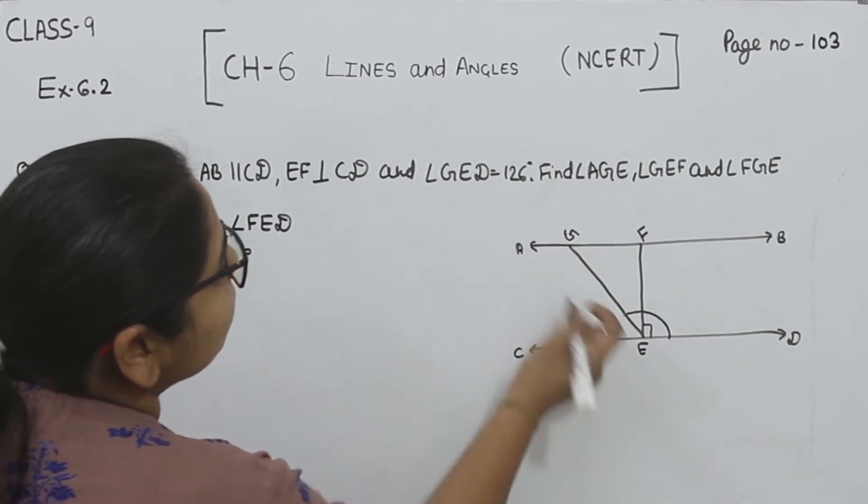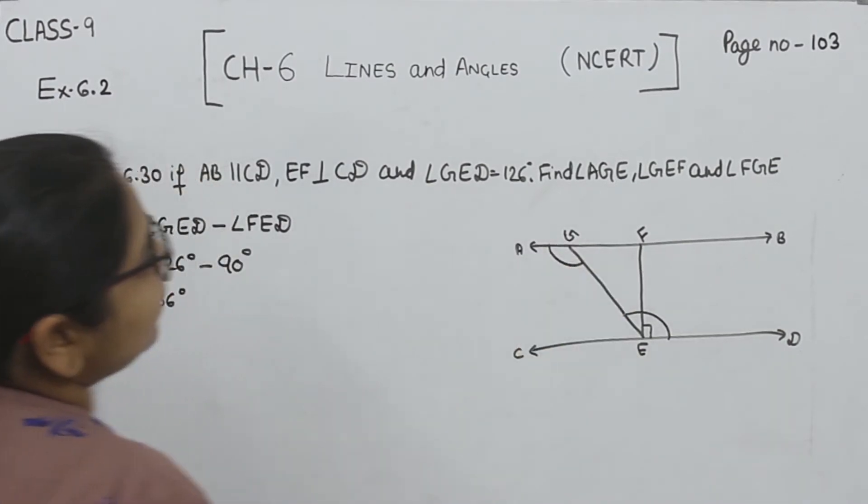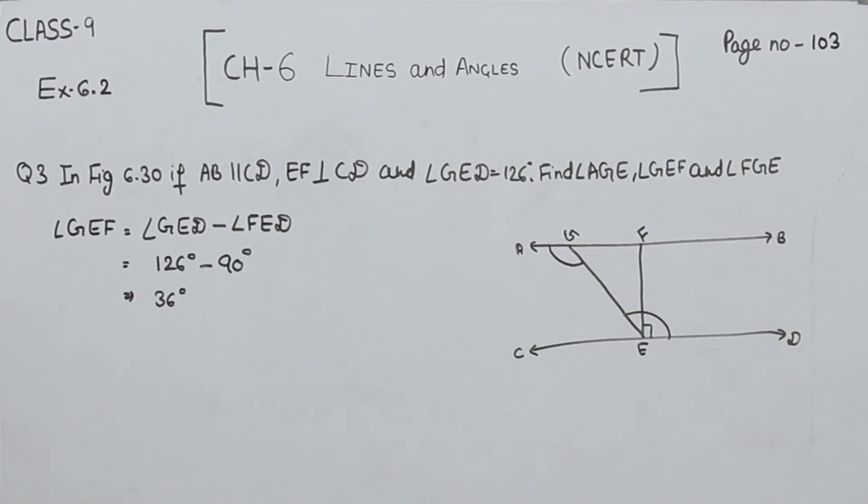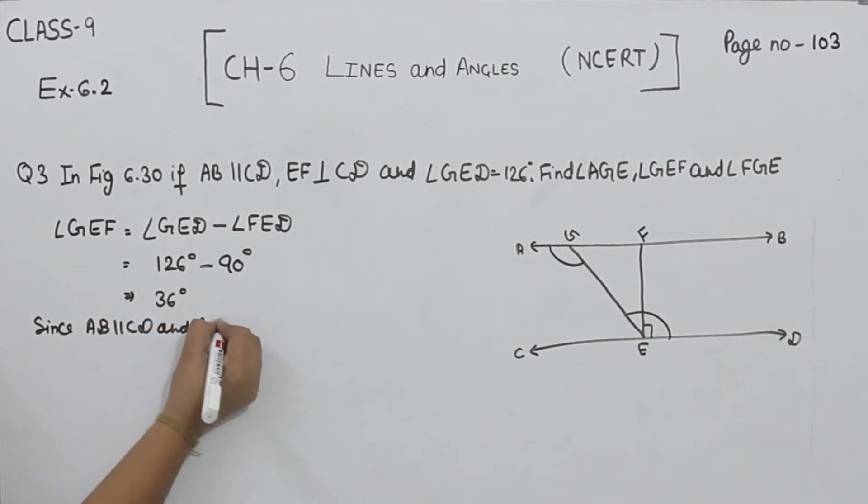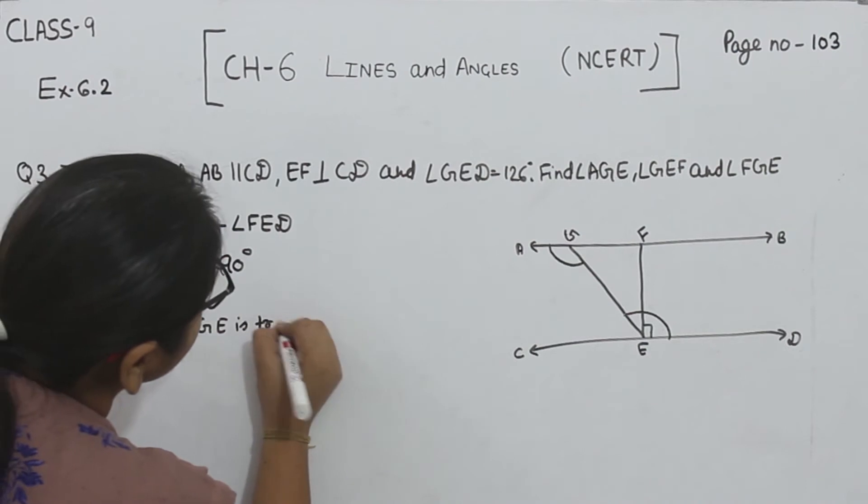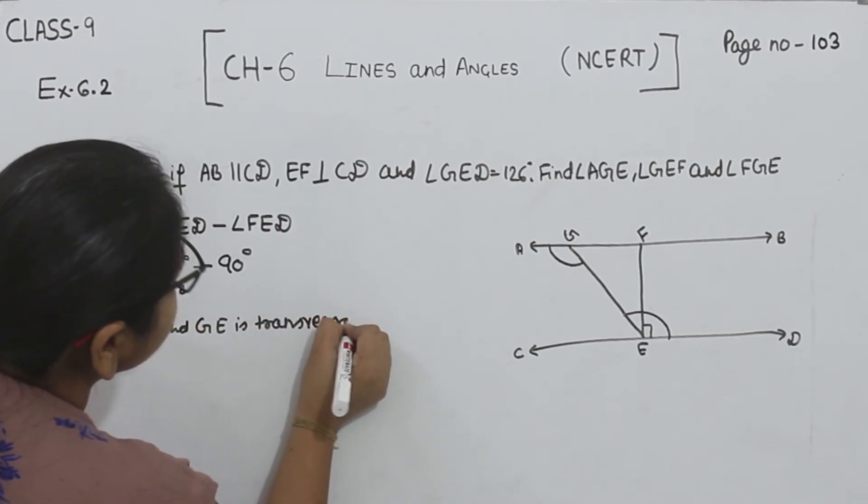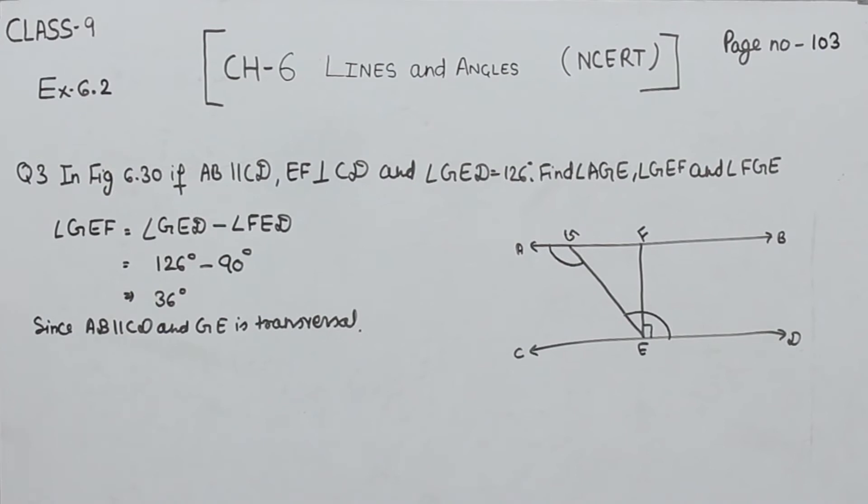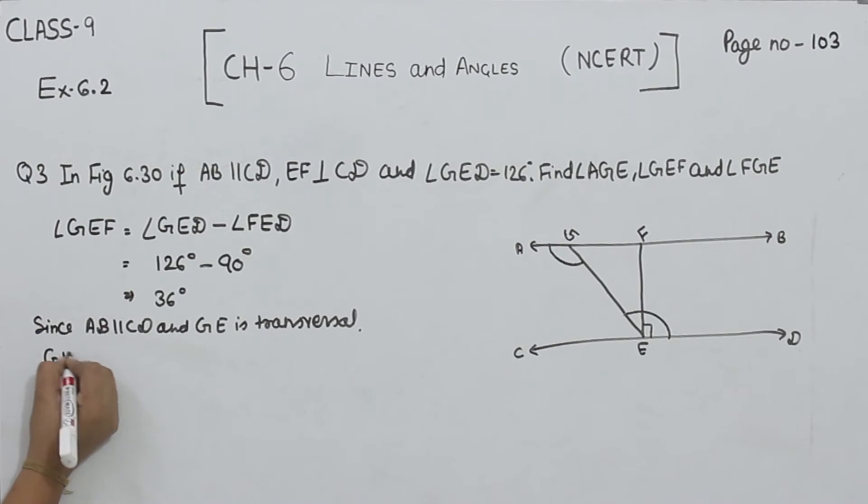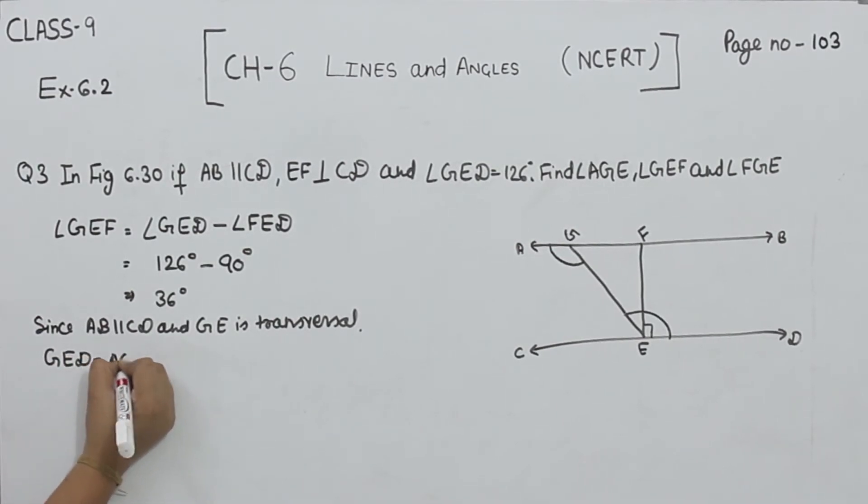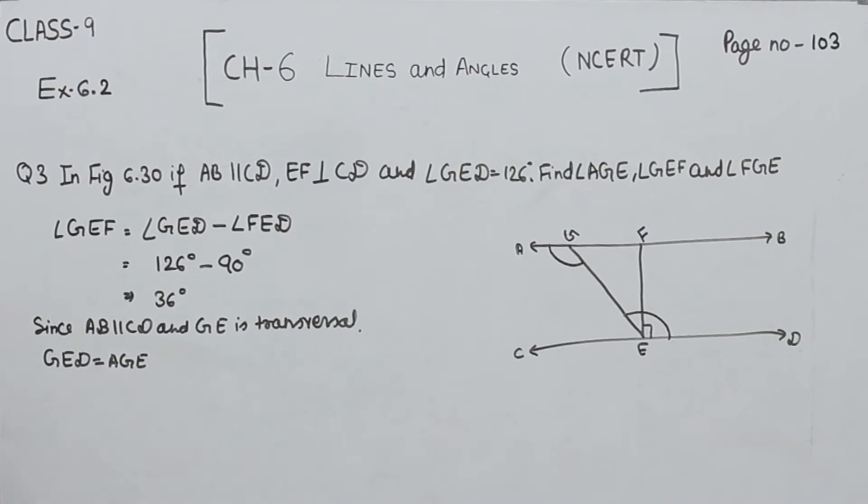The next angle is AGE. Now we want this angle. The line GE is a transversal. We will write the statement: since AB is parallel to CD and GE is transversal, angle GED equals angle AGE.